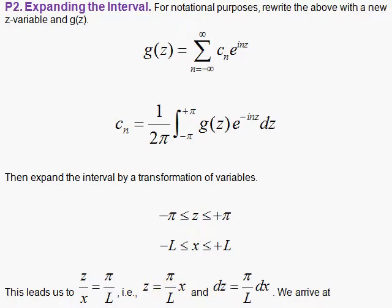I'm going to check that this indeed works. Taking the extreme, x equals l — the l's cancel and we get z equal to π. So that looks good. And then dz is π over l dx.